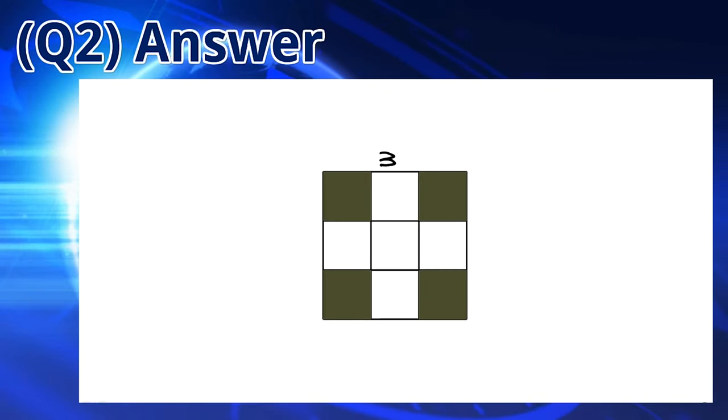This is a 3 by 3 square. There are 9 small squares of equal size. 4 are shaded. So the fraction is 4 out of 9. This means that the answer is D.